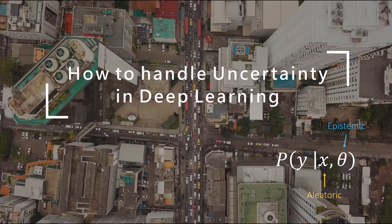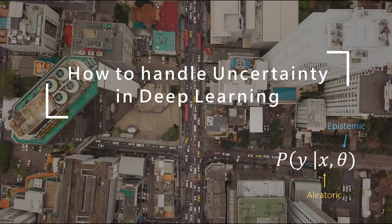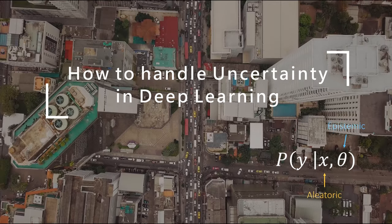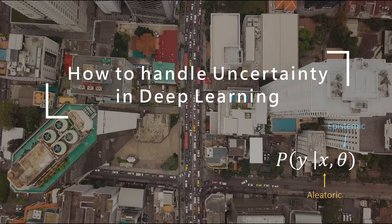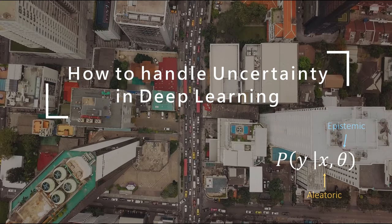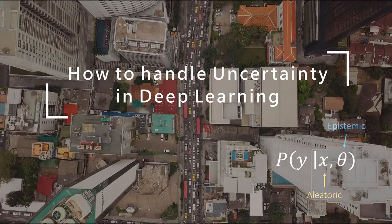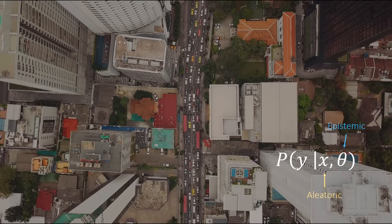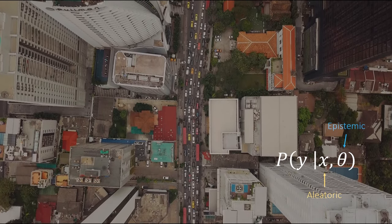Welcome back to this series on uncertainty in deep learning. Last time we had a look at aleatoric uncertainty, which is the uncertainty in the data. Today we'll have a deeper look at three methods to estimate the epistemic uncertainty, so the uncertainty in the model. I hope you enjoy it and don't hesitate to ask questions in the comments.